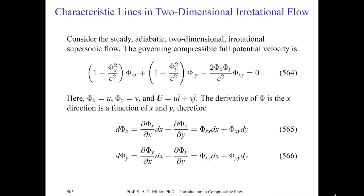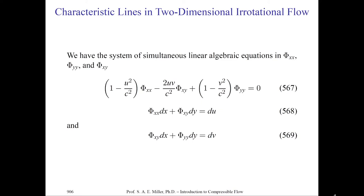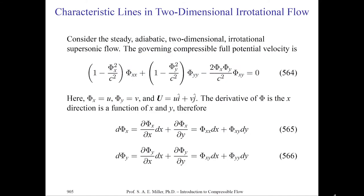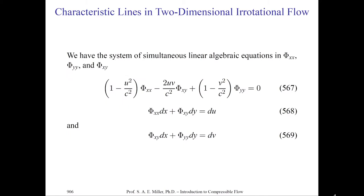The derivative of phi in the x direction is a function of x and y. We can differentiate d(phi_x) and d(phi_y), which gives us in 565 and 566: d(phi_x) equals phi_xx dx plus phi_xy dy; and similarly for d(phi_y). We now have a system of simultaneous linear algebraic equations in phi_xx, phi_yy, and phi_xy. Let's take our governing equation and mix substitutions from the previous page to simplify equations 565, 566, and 567.